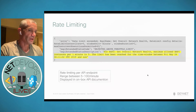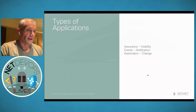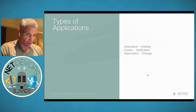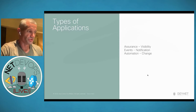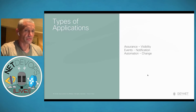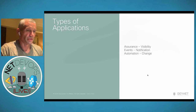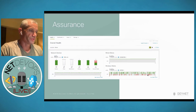There are three categories of applications: visibility (assurance — understanding what's going on in the network), notifications and events (getting access to network issues via your own eventing framework), and automation (making changes to the network). Today I want to focus more on the assurance/visibility and event notification pieces.